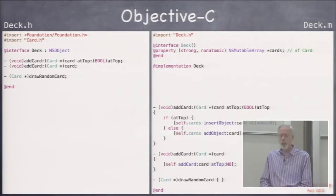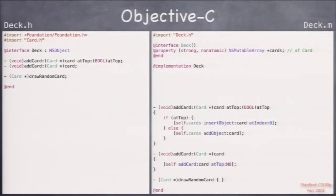Now that we have this array of cards, we could easily implement addCard by saying if atTop, then insert object card at index zero. Insert object at index is a method in NSMutableArray that inserts the object at that index in the array, and index zero is the top. Otherwise, if we're not going to put it at the top, we're going to put it at the bottom using addObject, which adds something at the end of the array.